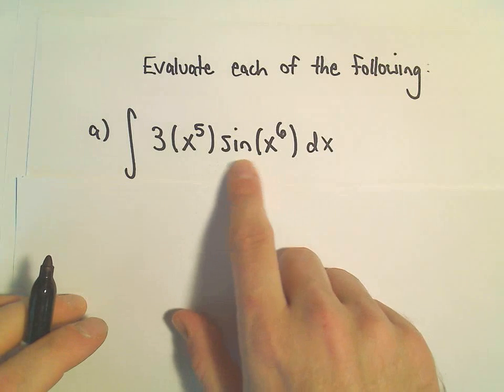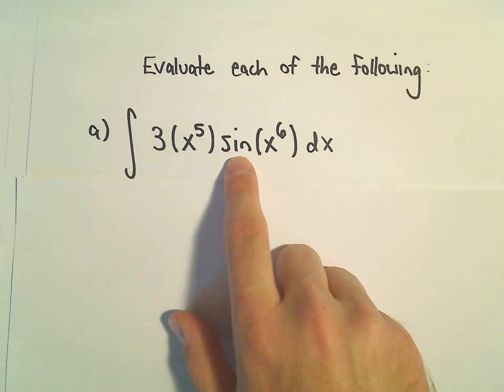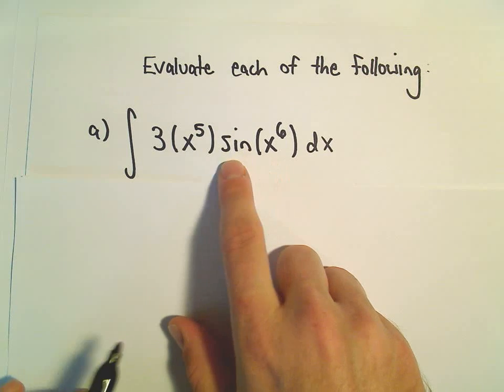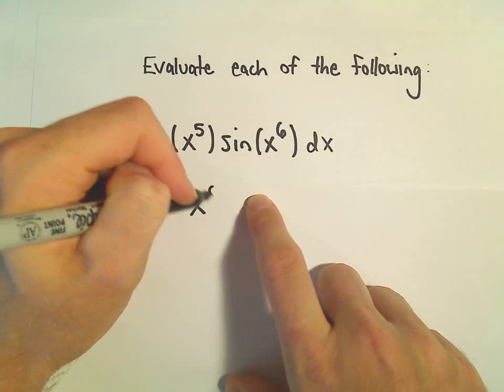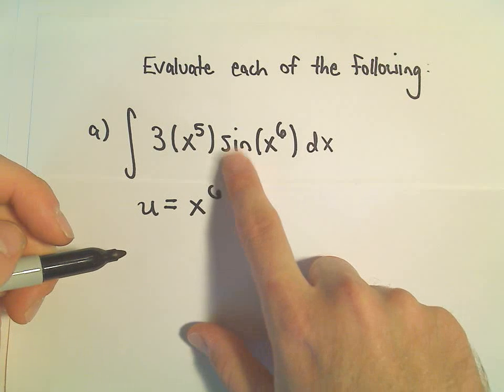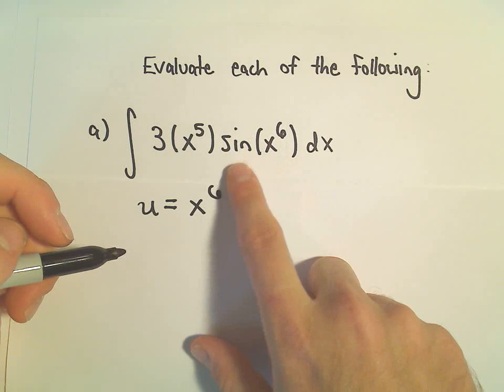And the other thing is there's a sine in here, and the only thing I can really integrate is just sine of a variable. So that to me also suggests perhaps we'll have to do a u-substitution to sort of turn that back into just sine of some just a single variable.